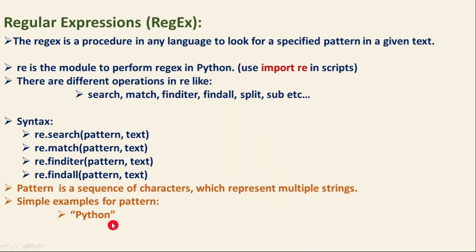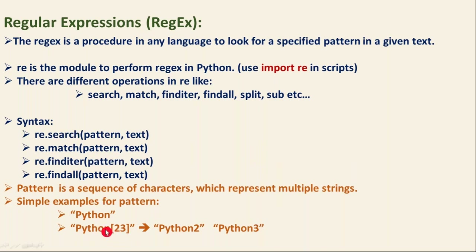But if I take the pattern as 'Python[23]', this is still a string normally, but when you use it inside regular expressions it becomes a pattern. If it is a pattern, it is going to represent two strings: Python2 and Python3. We need to know how the square brackets are going to work here — based on the square brackets, this entire string represents two strings. That's why this is called a pattern, and we have to learn these types of rules.